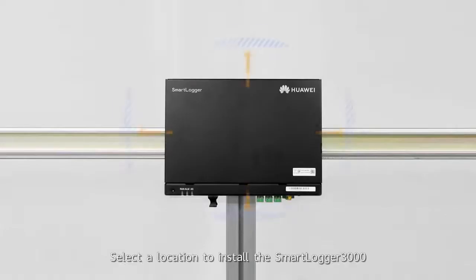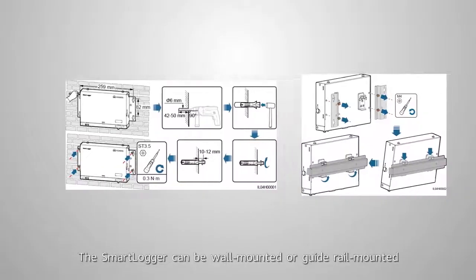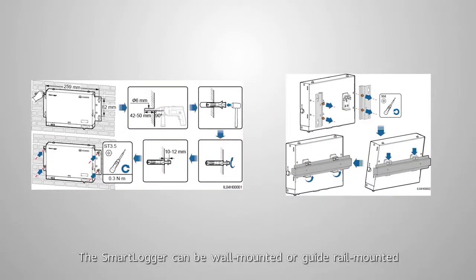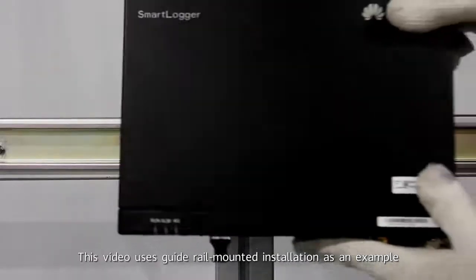Select a location to install the SmartLogger 3000. The SmartLogger can be wall-mounted or guide rail-mounted. This video uses guide rail-mounted installation as an example.